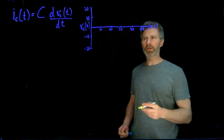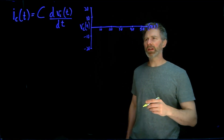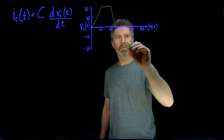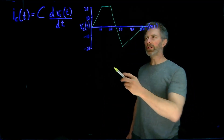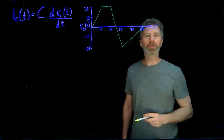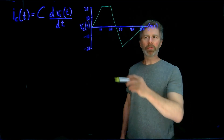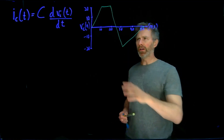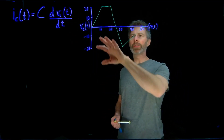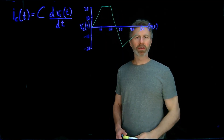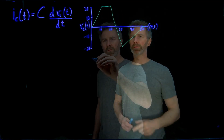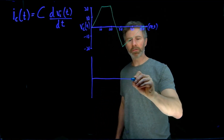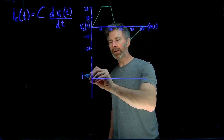So given a voltage Vc(t) that changes in a piecewise linear fashion, we can use our equation to figure out what the current is. I've drawn it this way to give you an idea of how to use this equation — we have very simple rates of change for the voltage, so it's pretty easy to figure out what the current is.